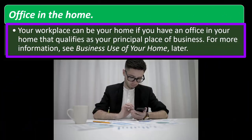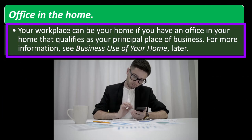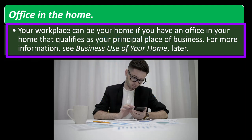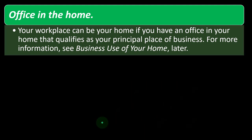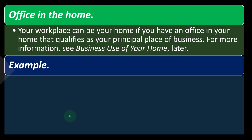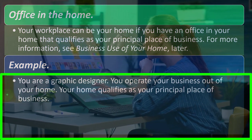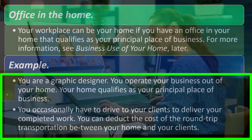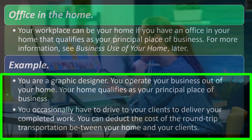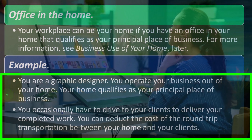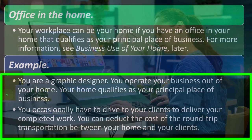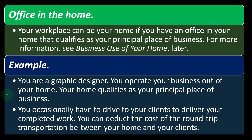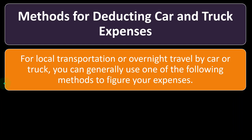Office in the home: your workplace can be your home if you have an office in your home that qualifies as your principal place of business. Example: you are a graphic designer and operate your business out of your home. Your home qualifies as your principal place of business and you occasionally drive to your clients to deliver your completed work. You can deduct the cost of round-trip transportation between your home and your clients — because your home is your principal place of business — and you're driving to your clients. Which means we would track the miles for those types of trips.